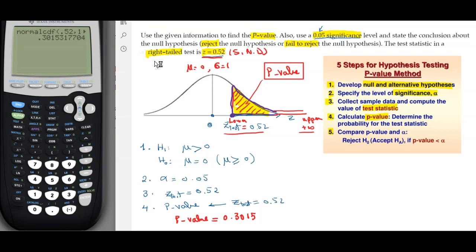We are ready for step number five. So the fifth step is to compare the p-value with the alpha. So the p-value here is 0.3015 and the alpha value is 0.05, so obviously here the p-value is greater.